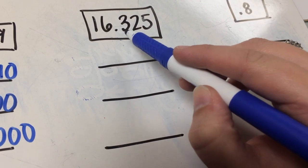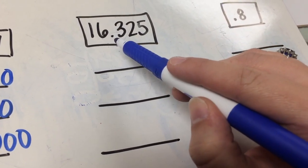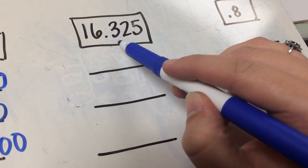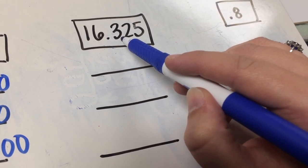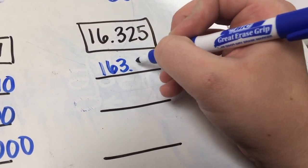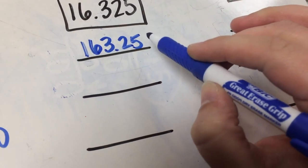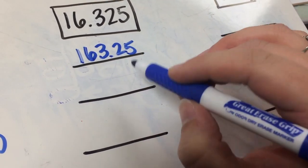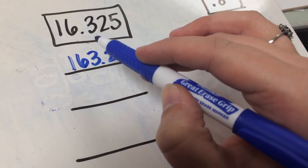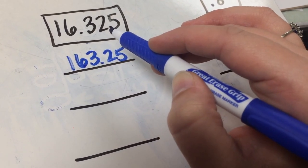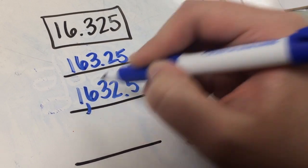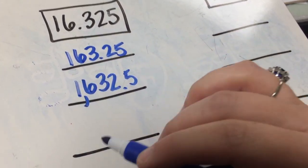So we have 16.325. We're not going to write our base number first because we need to know where our decimal goes. How many zeros in 10? One. So we just need to jump it over one place. The decimal point is now going to be between the 3 and the 2, so when you write it you have 163.25 — our new number is 163 and 25 hundredths. Now multiplying by 100 — how many zeros? Two. So we go one jump, two jumps. Our decimal point goes between the 2 and the 5, so we write 1,632.5 — that's 1,632 and 5 tenths.